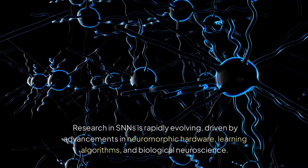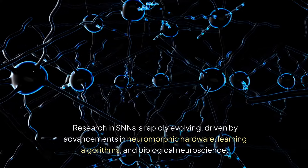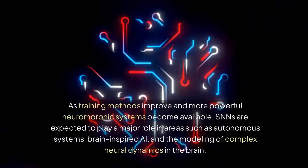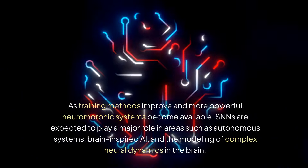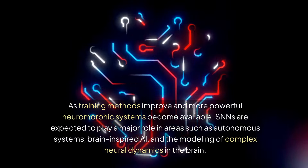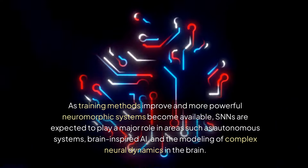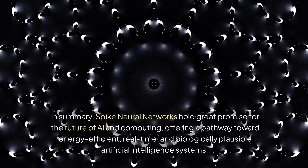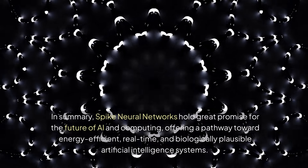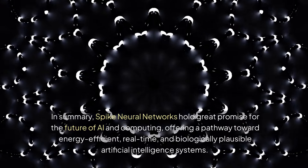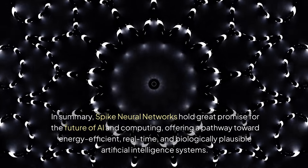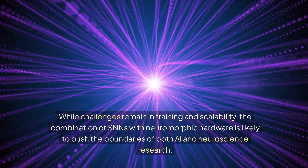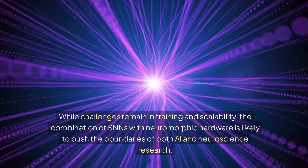9. Future Prospects: Research in SNNs is rapidly evolving, driven by advancements in neuromorphic hardware, learning algorithms, and biological neuroscience. As training methods improve and more powerful neuromorphic systems become available, SNNs are expected to play a major role in areas such as autonomous systems, brain-inspired AI, and the modeling of complex neural dynamics in the brain. In summary, spike neural networks hold great promise for the future of AI and computing, offering a pathway toward energy-efficient, real-time, and biologically plausible artificial intelligence systems. While challenges remain in training and scalability, the combination of SNNs with neuromorphic hardware is likely to push the boundaries of both AI and neuroscience research.